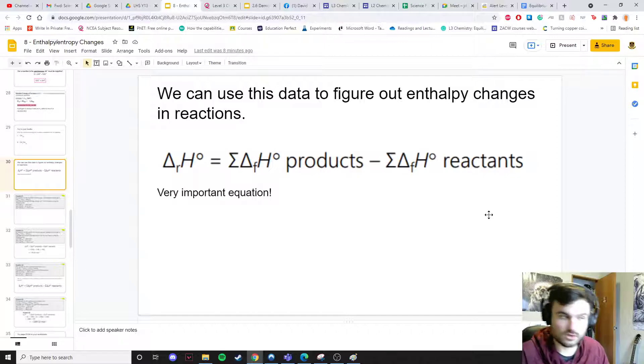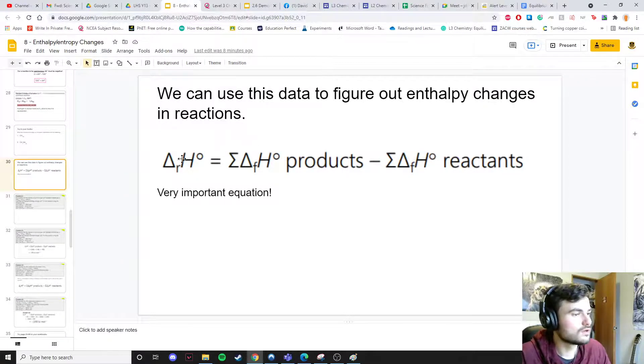Again it looks complicated. We're going to get to some examples and you're going to see that it's actually not so complicated. It starts to get a bit simpler. So delta H products minus reactants. It's always the way in chemistry: products minus reactants.